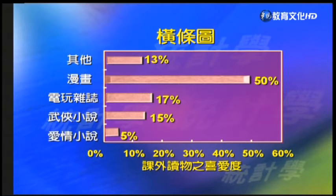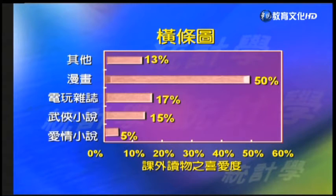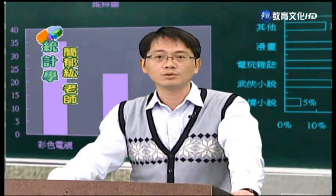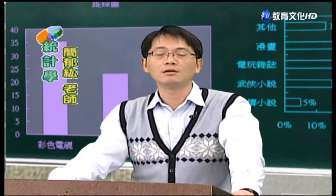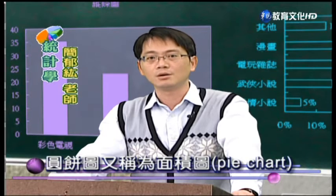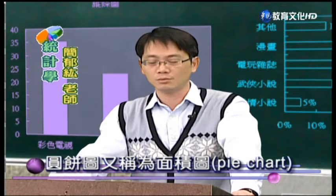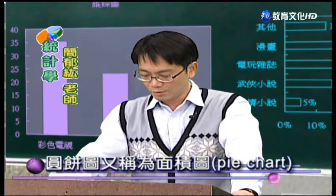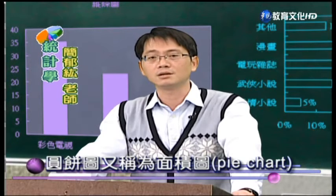從這個橫條圖可以看得出來，漫畫算是所有國中學生在課外閱讀裡面閱讀量最多的一種書籍，其他方面還有各個的電玩雜誌、武俠小說等。我們都可以借由這樣一個橫條圖來呈現國中學生課余閱讀情形。除了條圖之外，另外一種常用來呈現類別資料的圖形則是圓面積圖，或叫圓餅圖，是一種很常見的統計圖。